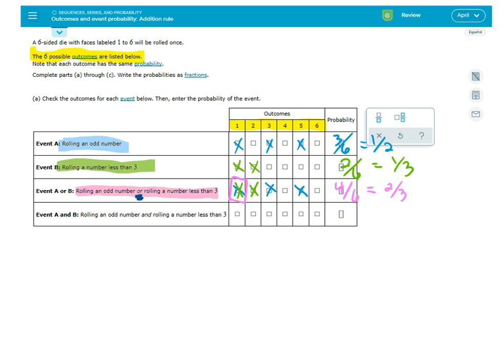And then the last one, event A and B. This is rolling an odd number and rolling a number less than three. Now when they say 'and' it has to be both odd and less than three. And there was only one of those and that was this box right here where I circled it. That box had both blue and green on it. So the number one is the only number that is both odd and less than three at the same time.